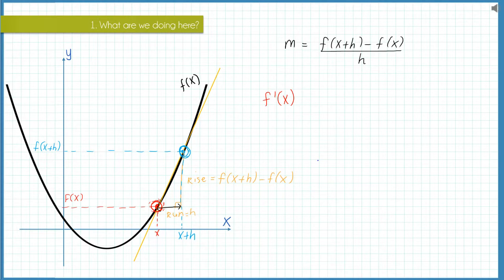Now you might think, well if h is infinitely small surely that just means that h is zero. Except if we look at this expression here we have division by h, and if we subbed in zero here then we'd have division by zero and we of course cannot divide by zero.